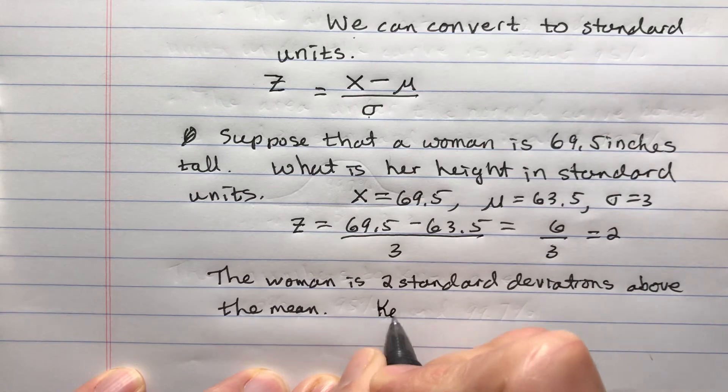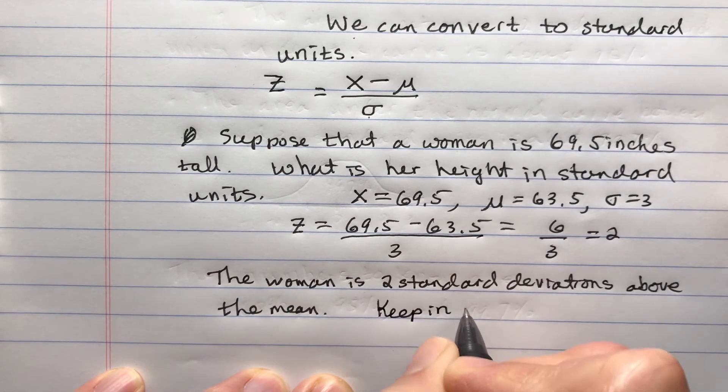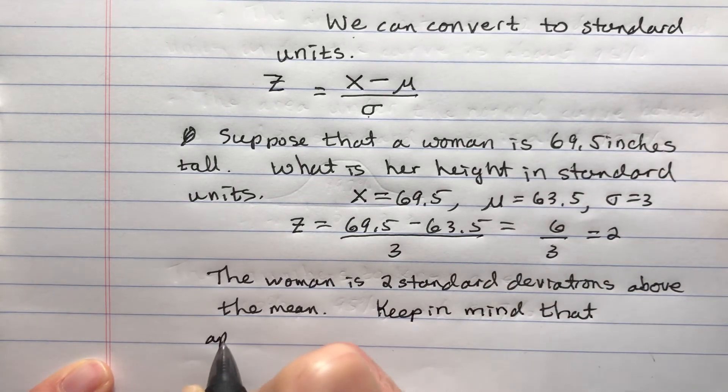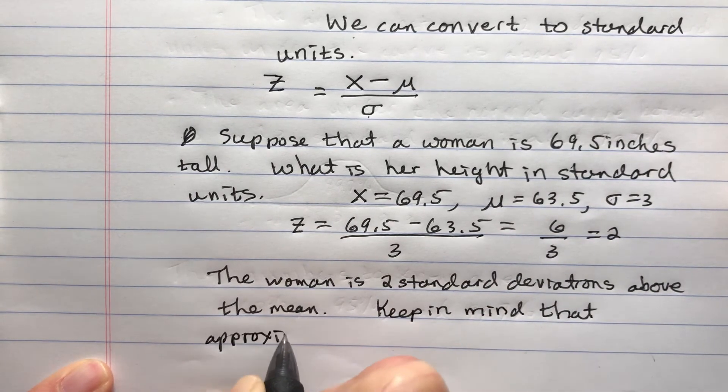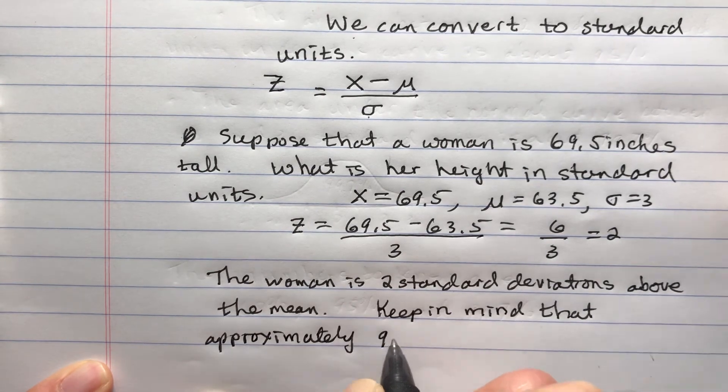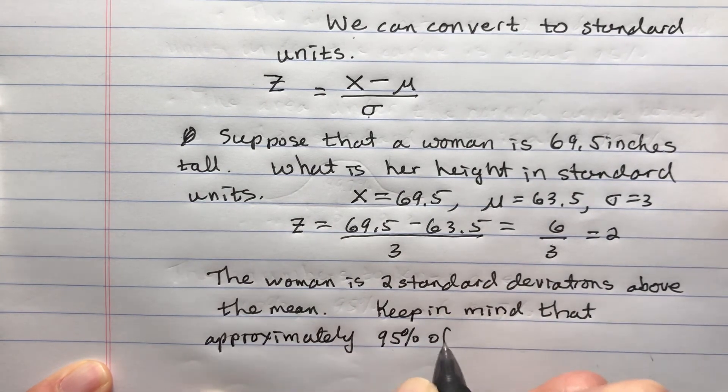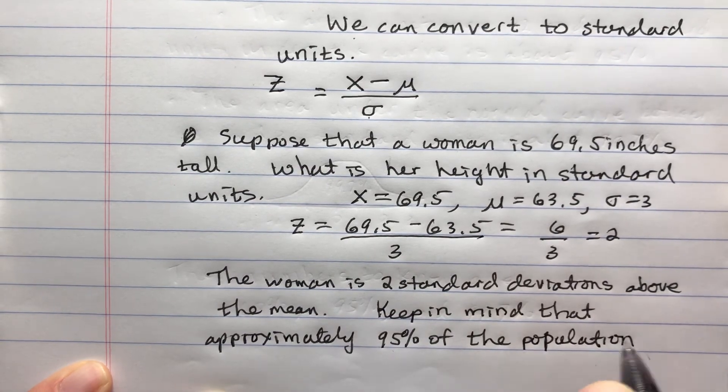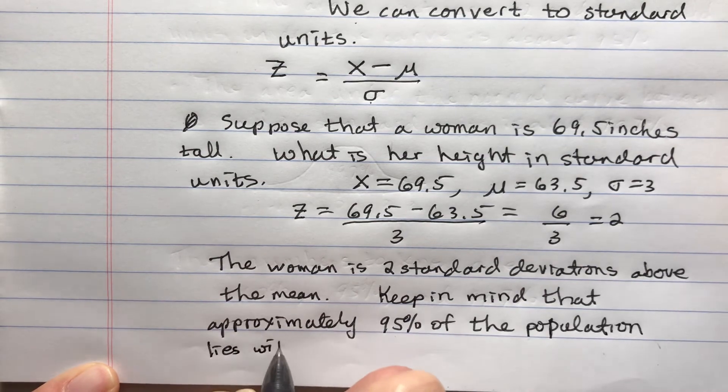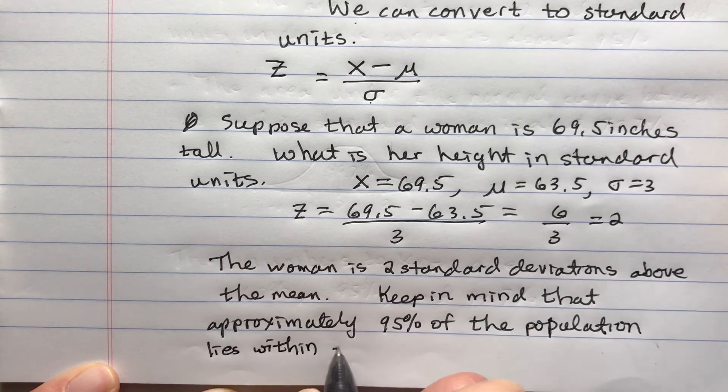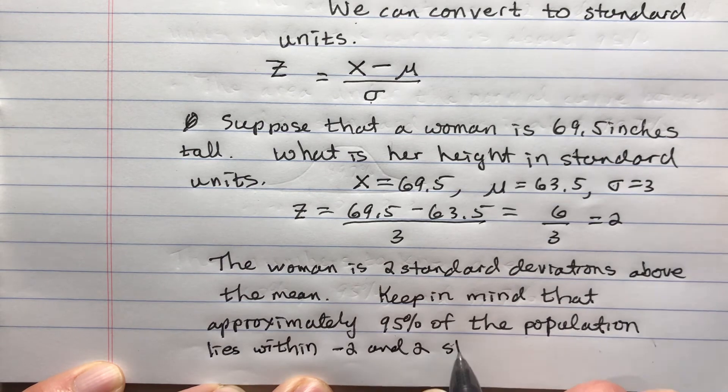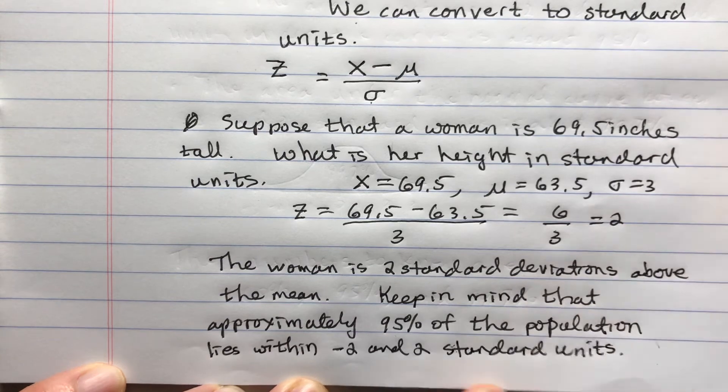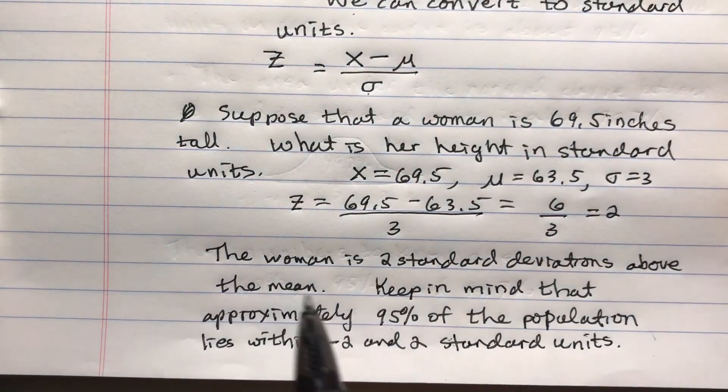Keep in mind that approximately 95% of the population lies within negative 2 and 2 standard units.